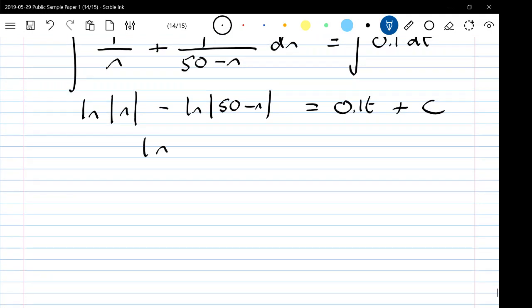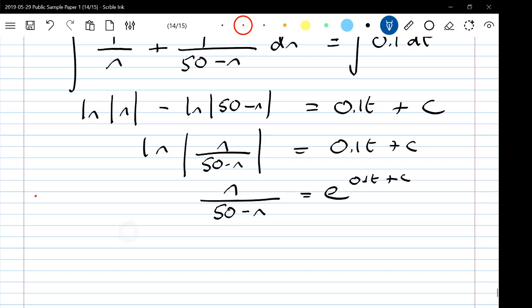Log laws tell us this is n over 50 minus n equals 0.1t plus c, so n over 50 minus n is e to the 0.1t plus c. That's not quite how they dealt with the constant. We remember that is the same as e to the 0.1t times e to the c because you add the powers, so that is A e to the 0.1t.